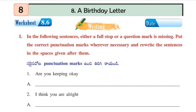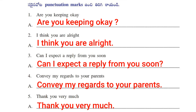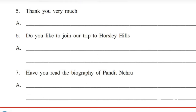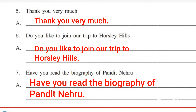Worksheet number 8.6. Here some sentences are given. We need to correct them by adding punctuation marks like capital letters, full stop, question mark, inverted commas — everything necessary — and rewrite it again. First one: Are you keeping okay? — question mark. Next: I think you are all right. — full stop. Third one: Can I expect a reply from you soon? — question mark. Next: Convey my regards to your parents. — full stop. Next: Thank you very much. — full stop. Next: Do you like to join our trip to Horsley Hills? Next: Have you read the biography of Pandit Nehru?